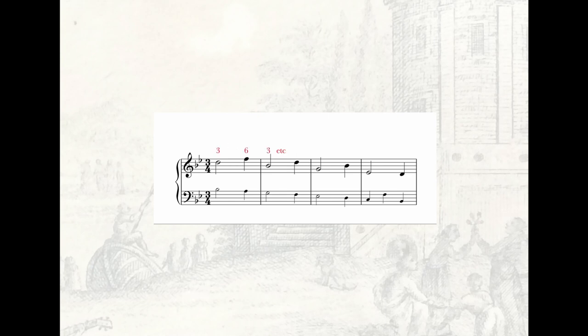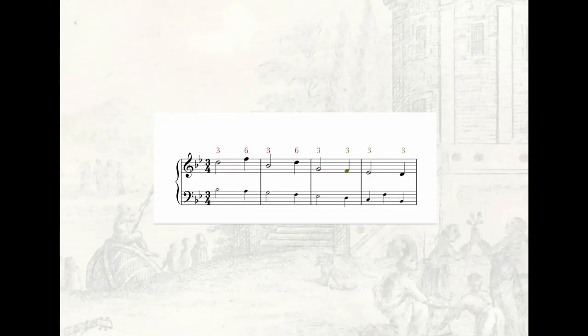In this version of the stepwise romanesca, vertical thirds alternate with vertical sixths. If one would like to emphasize the printer somewhat more, one could play on the third beat of bar three an F instead of a Bb.